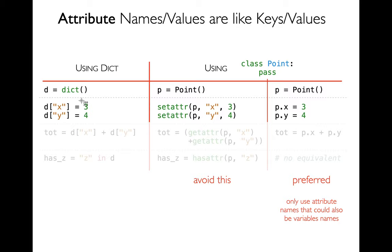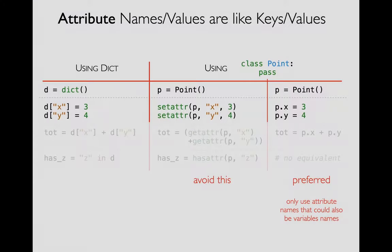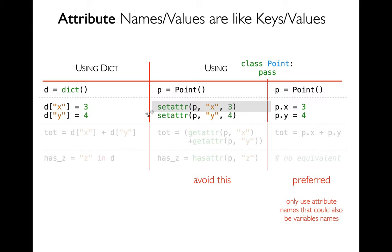If I want to put values in a dictionary, I do it like this: d['x'] = 3, and so on. There's also a built-in Python function called 'setattr', and I pass it three things: the object I want to modify, the attribute name, and the attribute value. These approaches are very analogous. The other way I can set attributes is: p.x = 3, and that's generally going to be preferred. I think this more tightly brings together the idea that objects created from classes are really kind of fancy dictionaries. It's really the same thing internally.